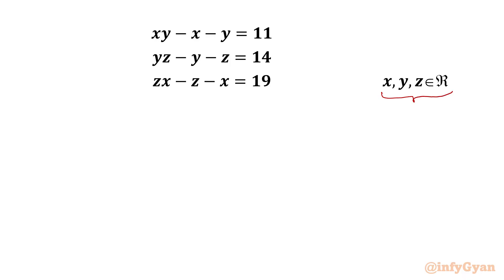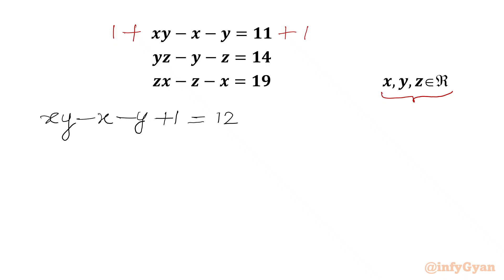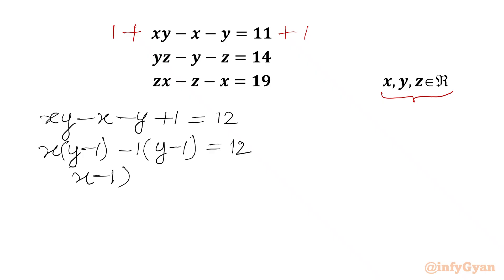Let's get started by adding one to both sides. I will add one to our first equation first. So LHS will become XY minus X minus Y, then we will add one. RHS will become 11 plus 1, so we will write 12. I can take X common from the first two terms, so in the bracket we write Y minus 1, then minus 1 common from the last two terms, giving Y minus 1 in the bracket. Now Y minus 1 is overall common, so we get the factors X minus 1 times Y minus 1 equal to 12. This equation we will call equation number 1.